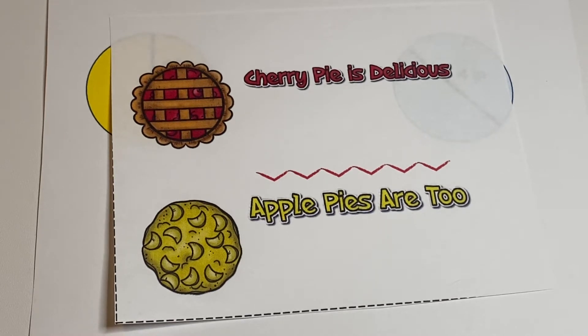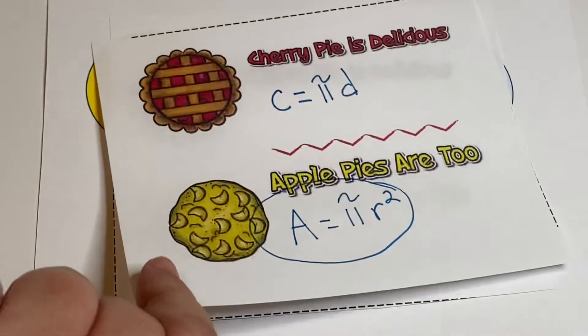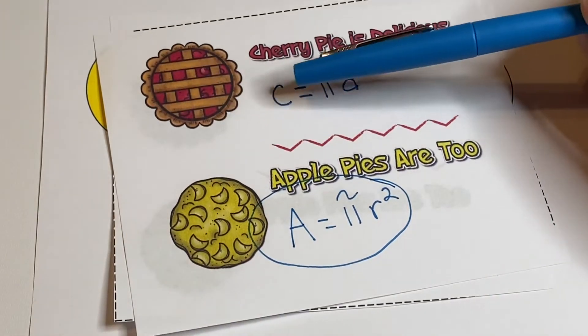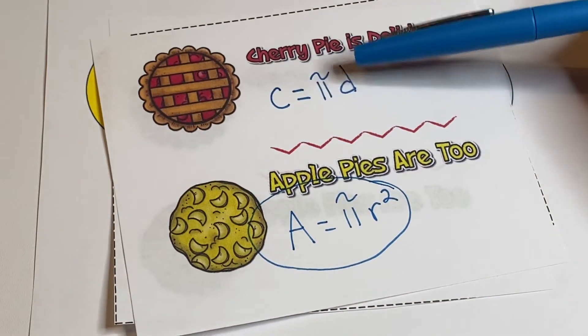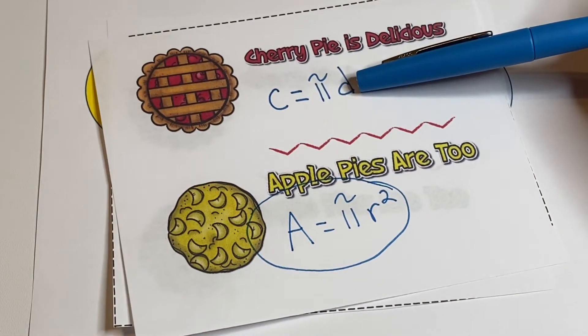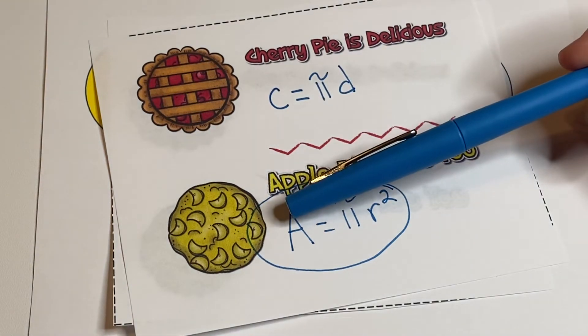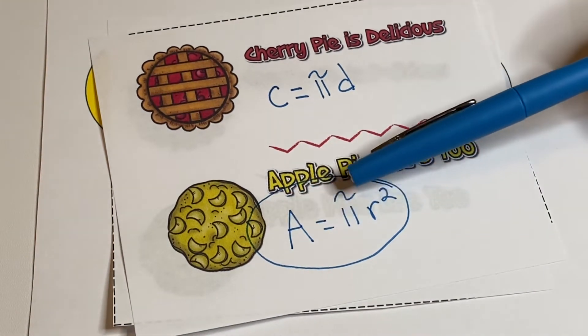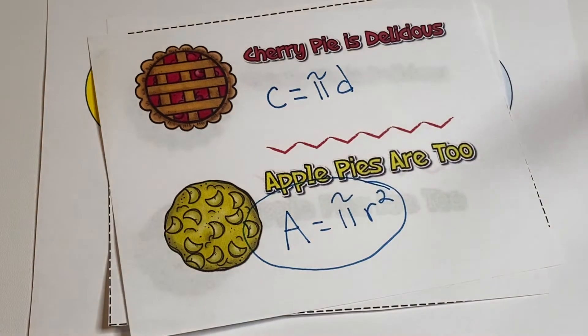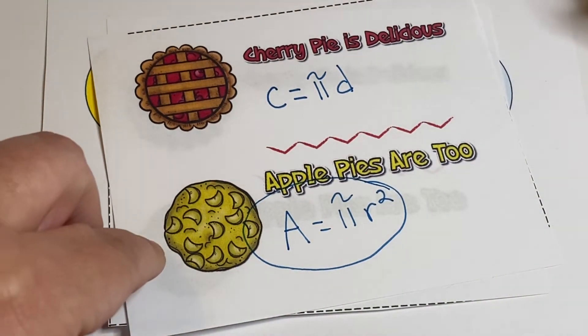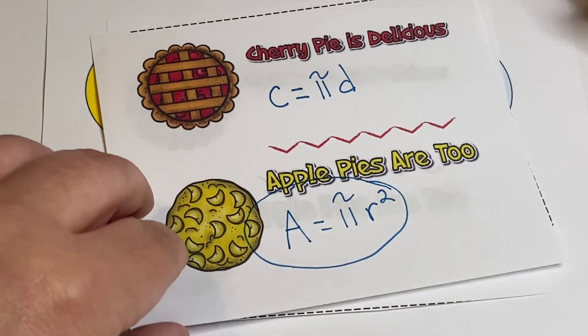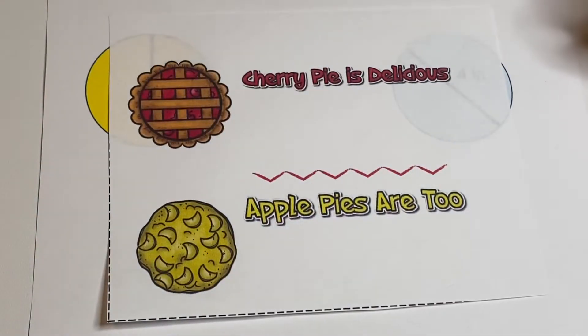Cherry pie is delicious, apple pies are two. What would that look like? You can check that by looking here. Circumference is equal to pi times diameter, and for area it's area equals pi r squared.